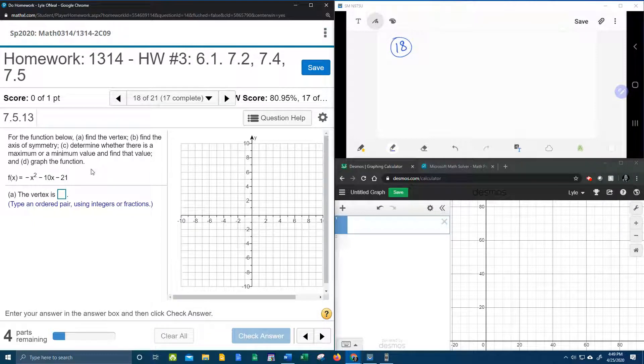Up here on the top, we're going to get started with the function f(x) equals negative x squared minus 10x minus 21. Now the first thing it wants us to find is the vertex, and it turns out for a quadratic function, there is a vertex formula.